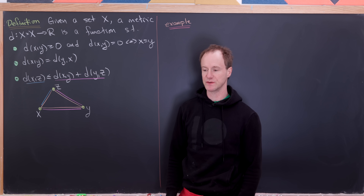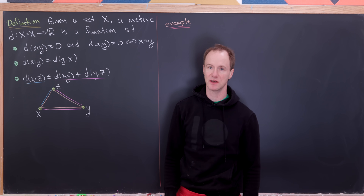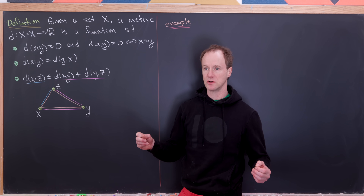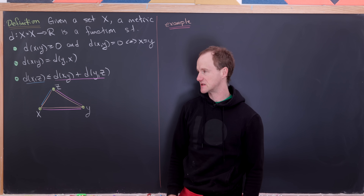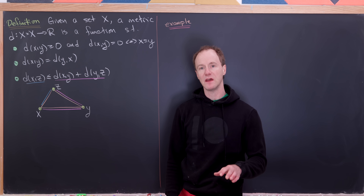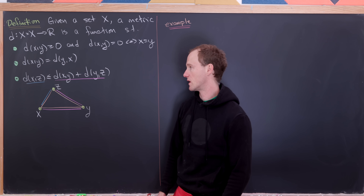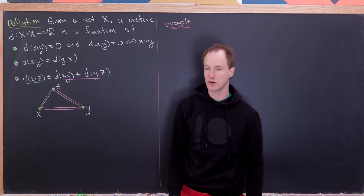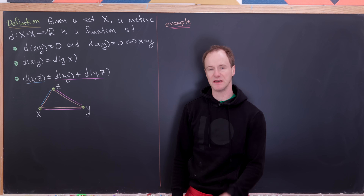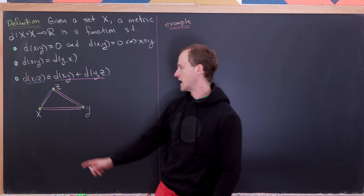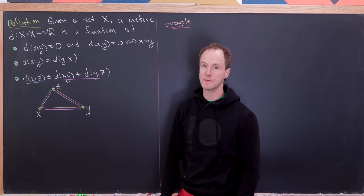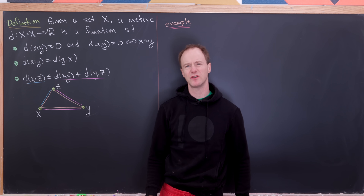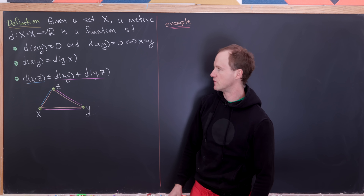What are some other conditions we should have? Well, we should have this symmetry condition: d(x,y) is the same thing as d(y,x). It shouldn't matter which direction you're measuring the distance — you should always get the same value. Then finally we've got the triangle inequality, which says for any points x, y, and z: d(x,z) is less than or equal to d(x,y) plus d(y,z). You can think of that as a picture — the direct distance from x to z is at most the sum of distances x to y and y to z.